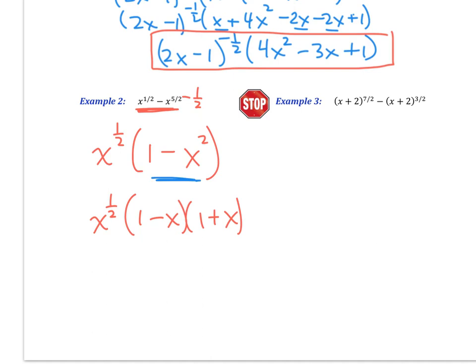All right, in example 3 here, it looks like I've got a GCF of x plus 2, and the 3 halves is the smaller of the 2. So I'm going to factor out a GCF of x plus 2 to the 3 halves power. That means that I am left with, well 7 halves take away 3 halves would be 4 halves, or x plus 2 squared. So I've got an x plus 2 quantity squared. And then if I take all of this out, I'm left with minus 1.